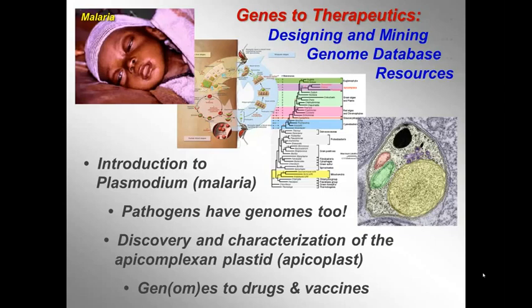and as a clue to identifying therapeutics that might be effective in controlling malaria. I also discussed the discovery of the apicomplexan plastid, a distinctive organelle acquired when an ancestor of these parasites ate a eukaryotic alga — or was invaded by that alga, depending on your perspective — indicated in green here, an organelle that is the target for certain classes of antibiotics, validating it as a target for new drug development, and that if only we knew what this organelle did.